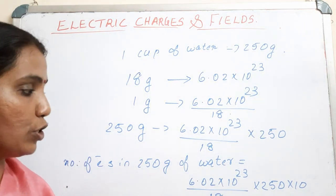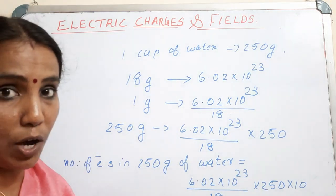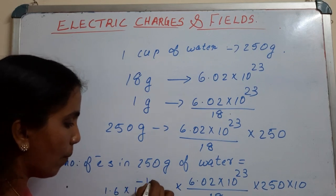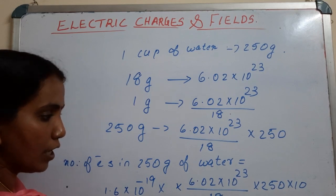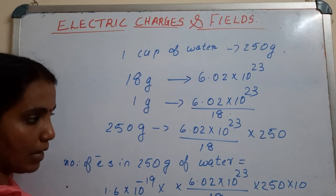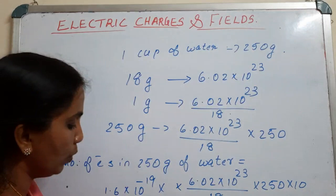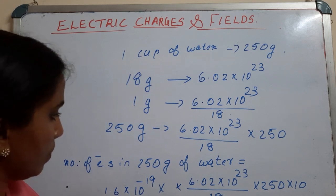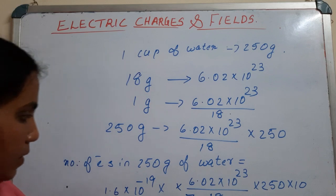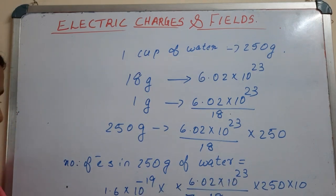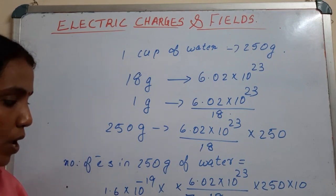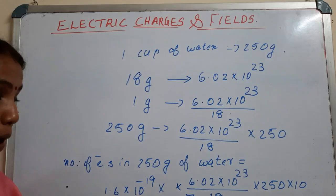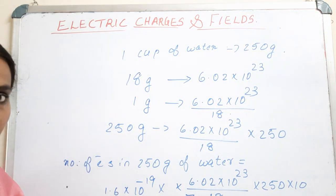To get the amount of charge, this number of electrons is multiplied by the charge of one electron, 1.6 × 10⁻¹⁹ coulomb. When you do the calculation, the answer is 1.34 × 10⁷ coulomb. That is the amount of negative charge in 250 grams of water, and the same amount of positive charge is also present.